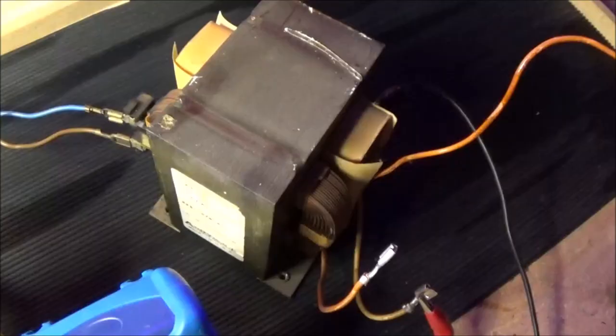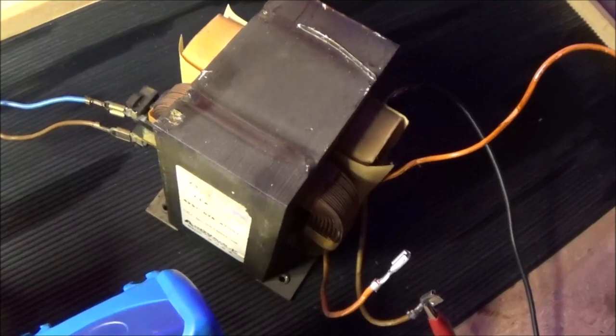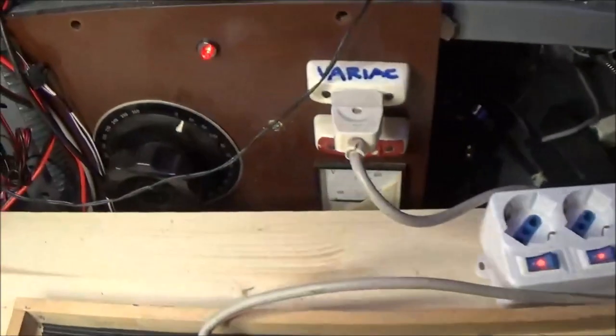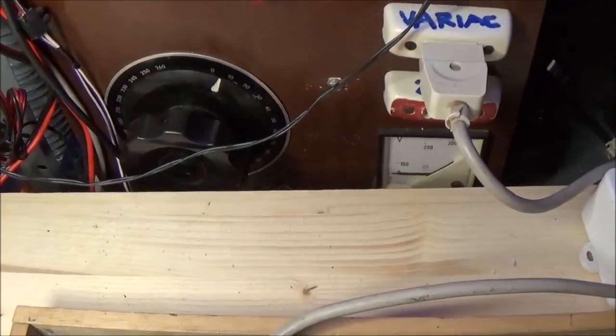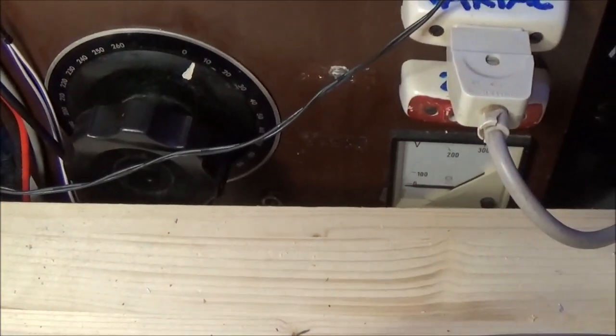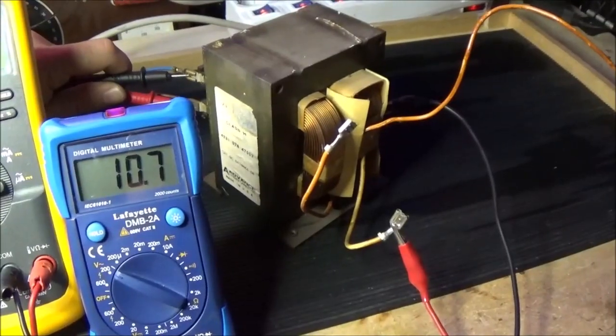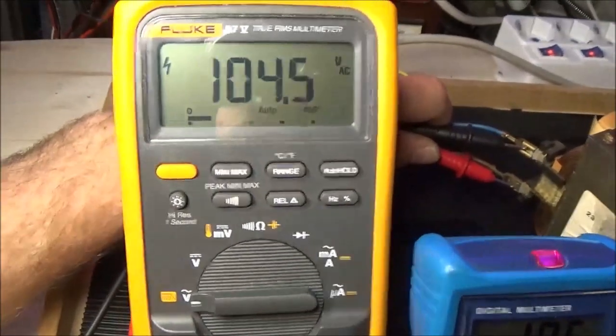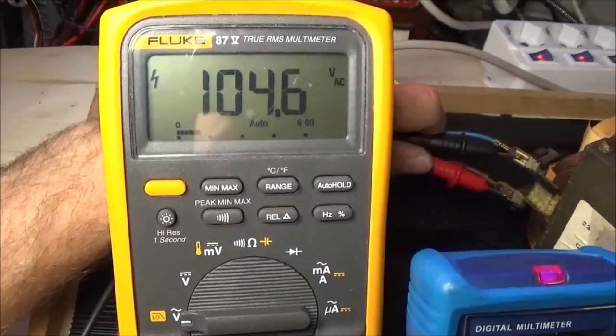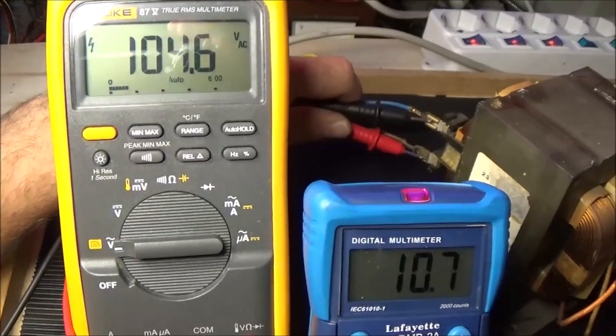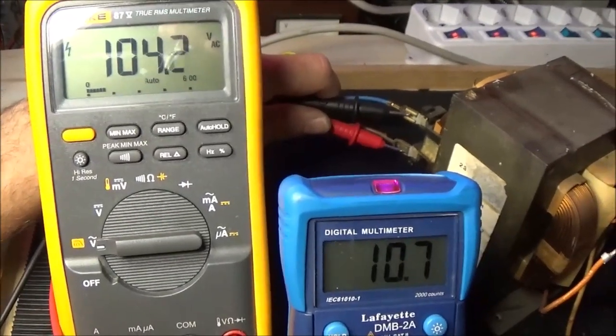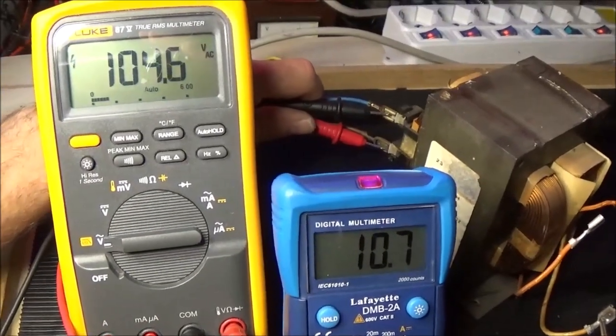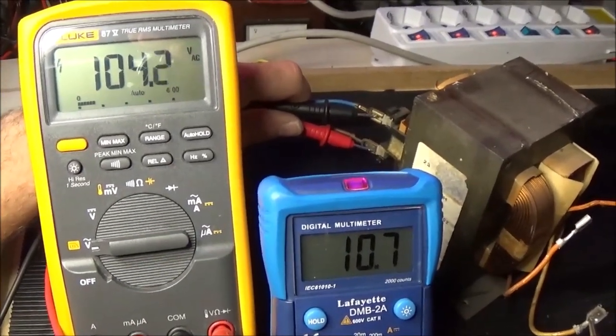First test, I will connect the MOT transformer to the main power supply by a VARIAC in order to regulate the amount of voltage. I give 10 volts at the primary and at the secondary I have 100 volts, so a turn ratio of about 10. So if I supply at 230, I will get 2.3 kV at the secondary.